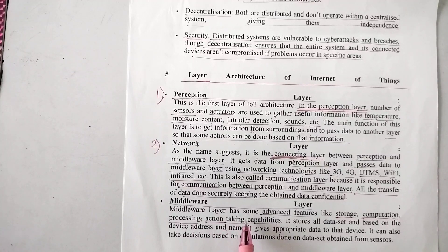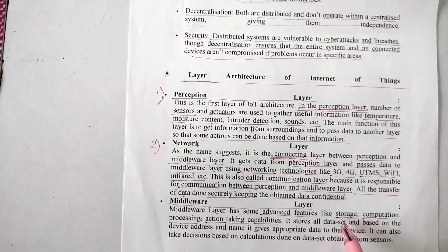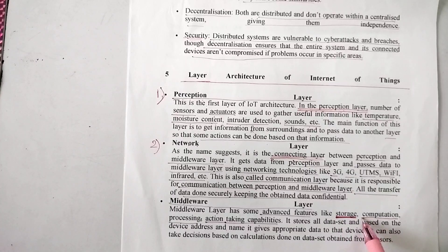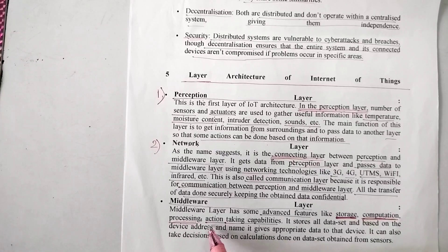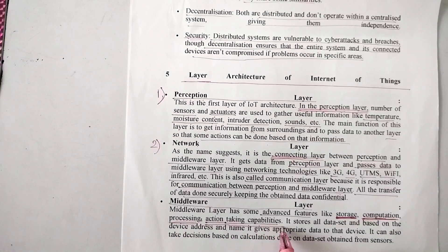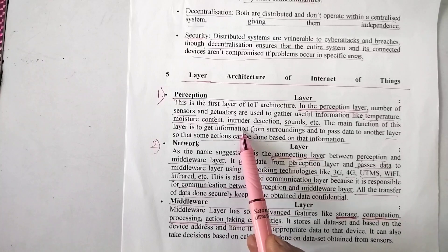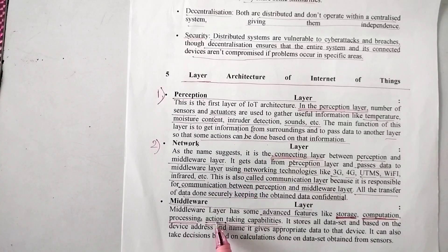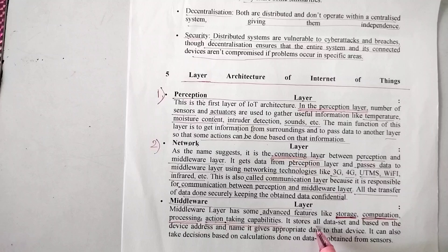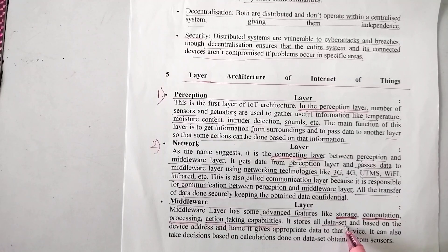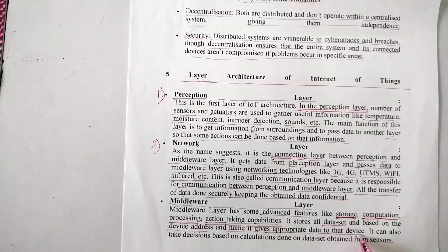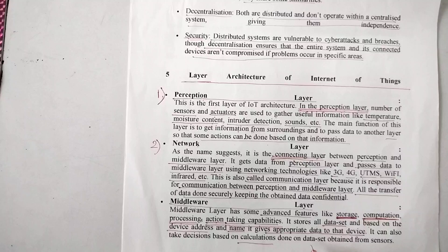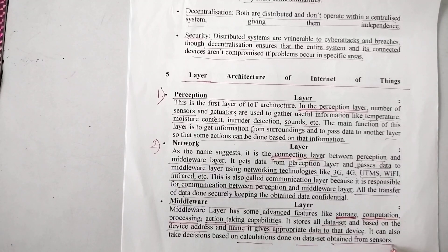The middleware layer does some actions on this particular data. First of all, it provides storage for that data, then it provides computation for data wherever it is required for processing, and then it has action-taking capabilities that based on the data collected by the sensor, this action should be taken. It stores all data sets and based on device address and name, it gives appropriate data to that device.